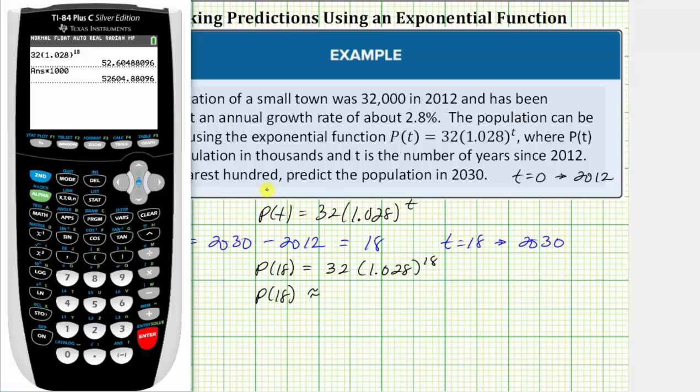We can see this first value really represents approximately 52,605 people. But we are asked to make the prediction to the nearest hundred. So we'll express the value two ways. We can say 52.6 thousand or 52,600.